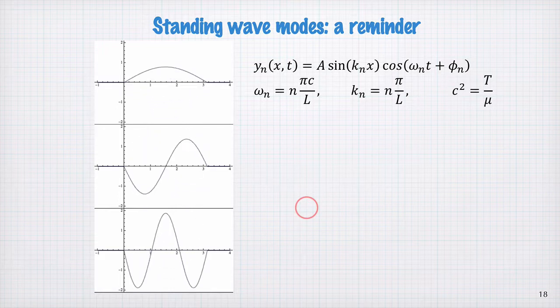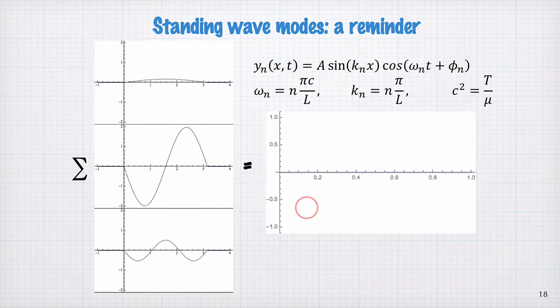Now, these modes can coexist. We can have a linear superposition of these modes. If we add these three modes up, we get some time evolution that looks like this.